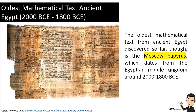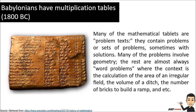Now we will proceed to the multiplication table of the Babylonians. Many of the mathematical tablets are problem texts — they contain problems or sets of problems, sometimes with solutions. Many of the problems involve geometry, and the rest are almost always word problems where the context is the calculation of the area of an irregular field, the volume of a ditch, the number of bricks to build a room, and so on.